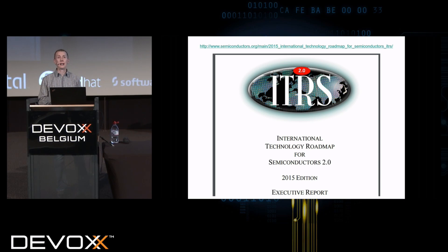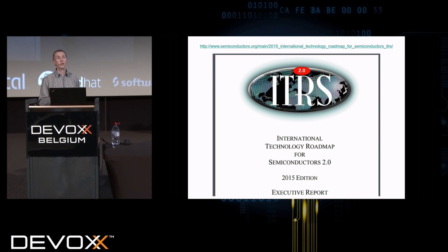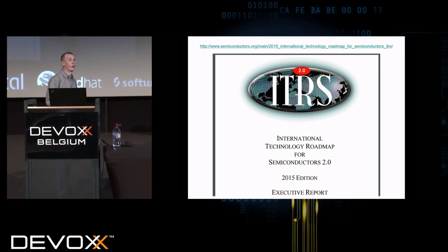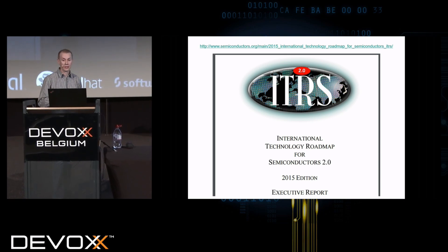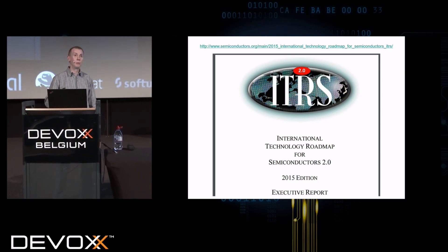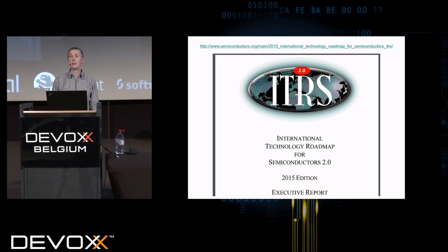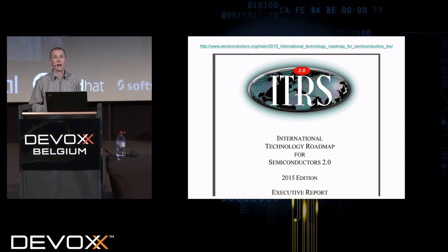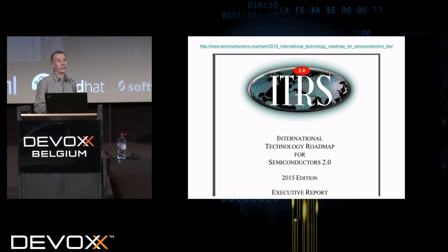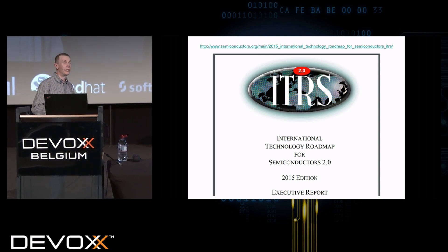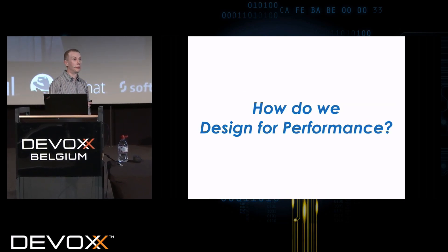As Moore's Law continued, we tended to get increasing clock speeds — that has stopped now. We then got increasing transistor density, which is still happening but slowing down greatly. We're now reaching the point where economics is going to drive our future and not the physical side of the world. So let's look at what that actually means — should we actually care about performance?